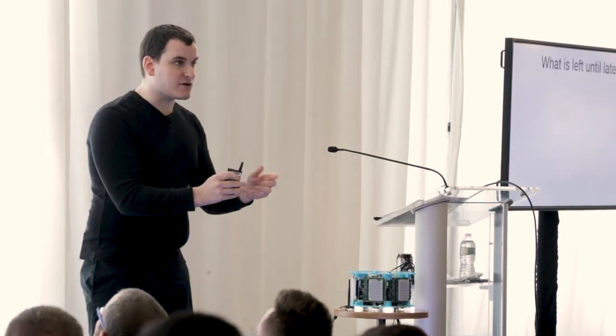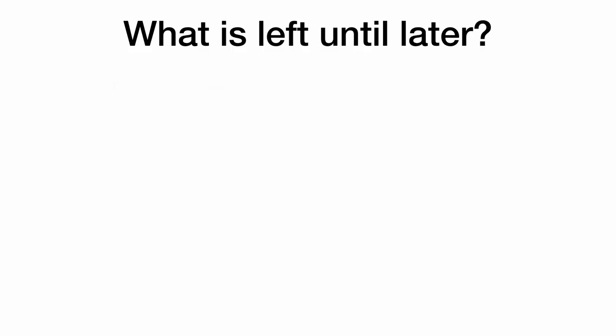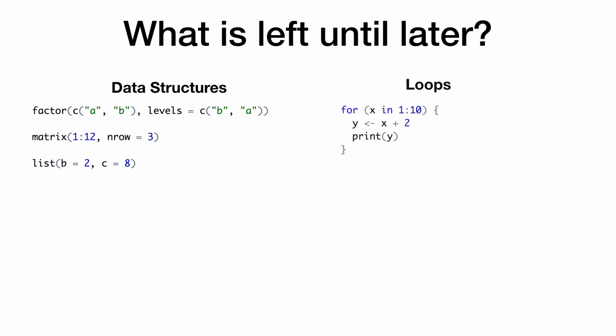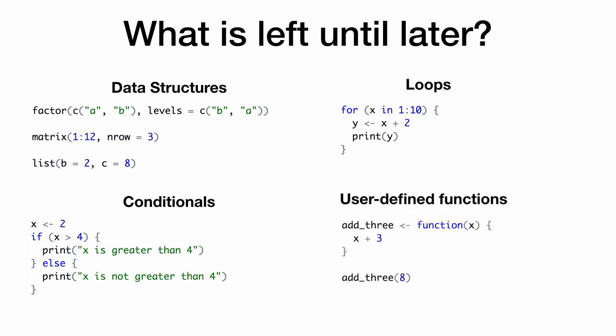So anytime we choose what to teach first, we have to choose what to leave until later. And here there's some things that people might consider really important parts of R that we don't get to early in a course. So one example is data structures. Neither of these courses talks about what a factor is, how to create a matrix, or even what a list is. Almost everything is done on data frames and atomic vectors. It doesn't introduce loops. So this is an example of, say, a for loop, and none of the courses work with that because they can often be replaced by a group by and a summarize. We don't teach conditionals. These are considered, and they properly are, a fundamental unit of programming, but it's not included within how we might deal with data in the tidyverse.